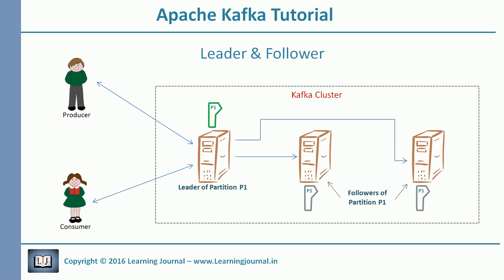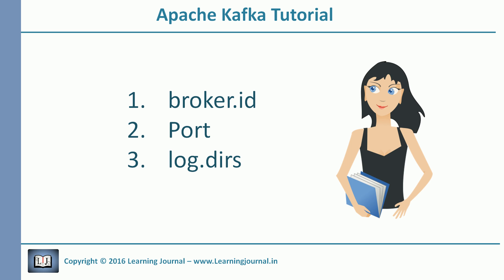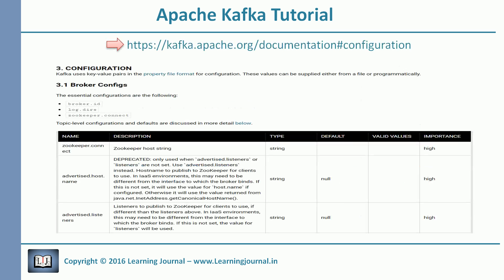Hello and welcome to Apache Kafka tutorial at Learning Journal. In the previous video, we started a multi-node cluster on a single machine. We have also seen some configuration parameters like broker ID, port number and log DIRs. Apache Kafka is a highly configurable system and it provides many configurable parameters. Most of them have a reasonable default so you don't need to worry about all of them. In this session, I'll cover some key broker configurations. I recommend that you check the documentation for the complete list, as reading them at least once will give you some idea about available configuration and help you customize Kafka for your use case.